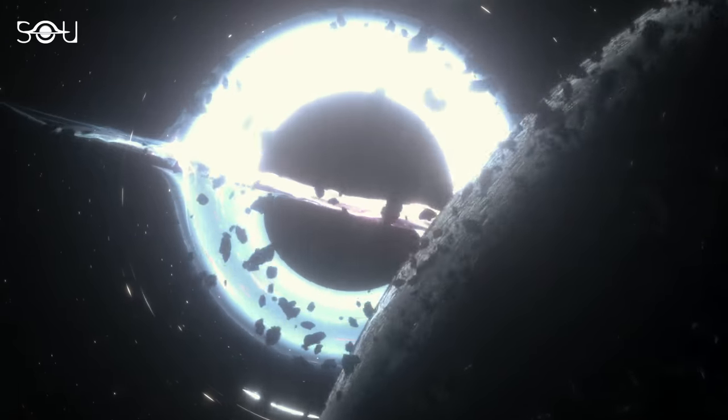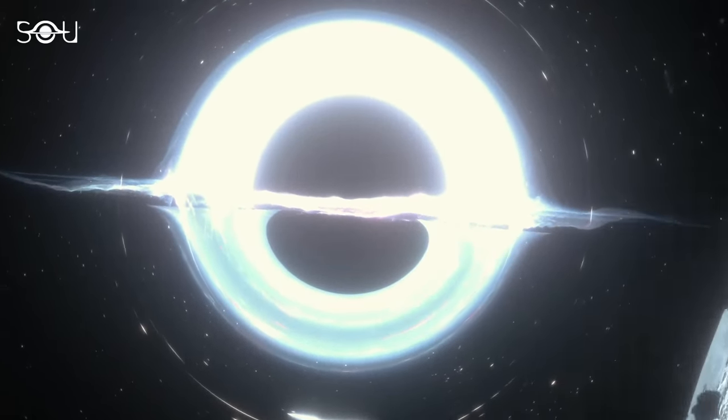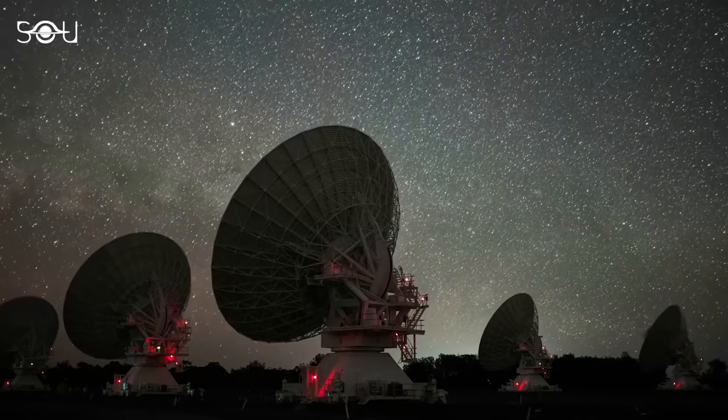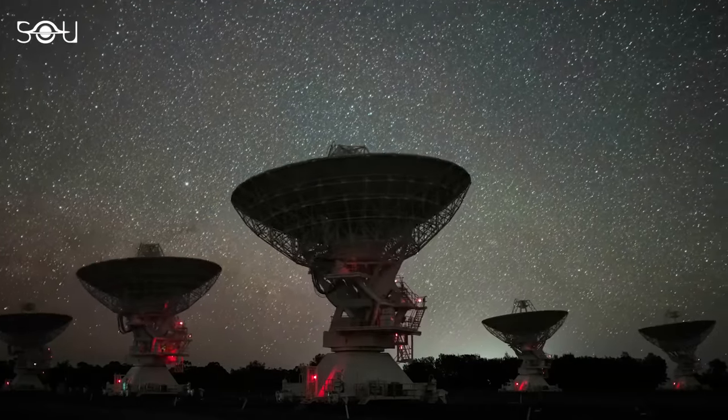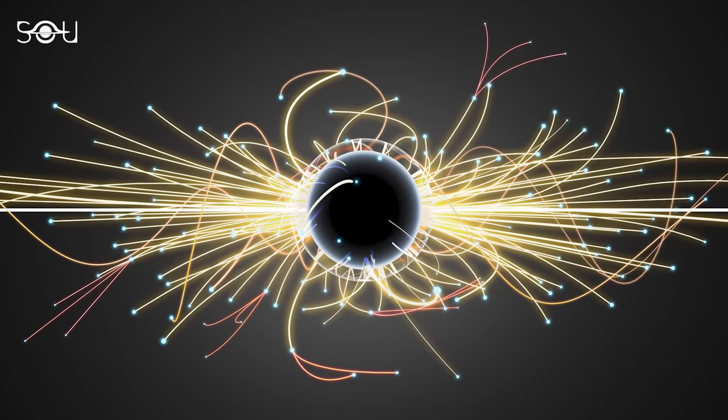Hawking radiation has remained elusive for a long time because it's too faint to detect from supermassive black holes. However, since its discovery can lead to groundbreaking results in physics and astronomy, scientists tried to study its nature through lab-grown black hole analogs.